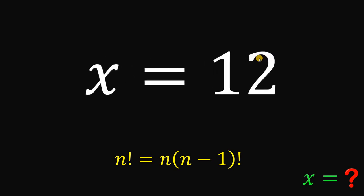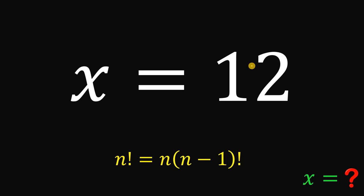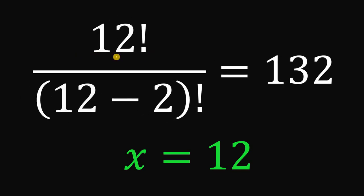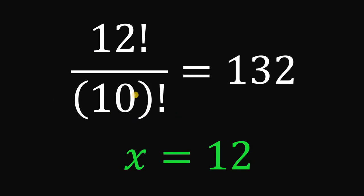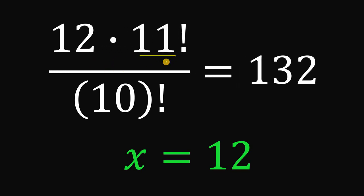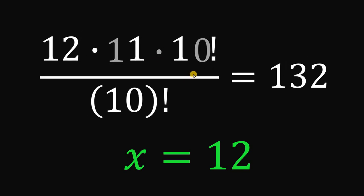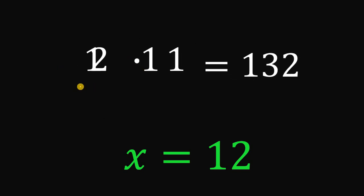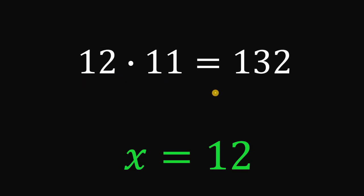That is our answer. Now let's check: replacing all x with 12 in our equation, 12 minus 2 simplifies to 10, so the denominator is 10 factorial. For 12 factorial, we rewrite it as 12 times 11 factorial, and 11 factorial as 11 times 10 factorial. The 10 factorial in the numerator and denominator cancel, leaving 12 times 11, which equals 132.